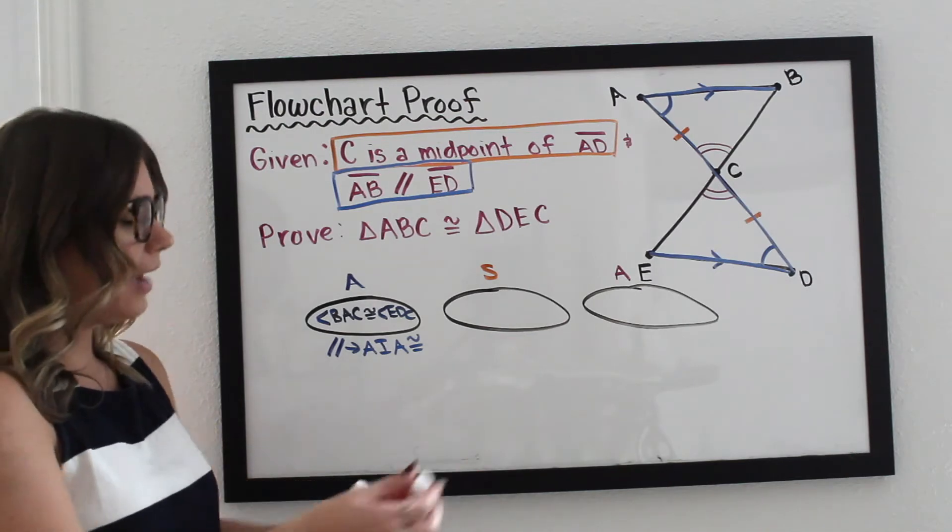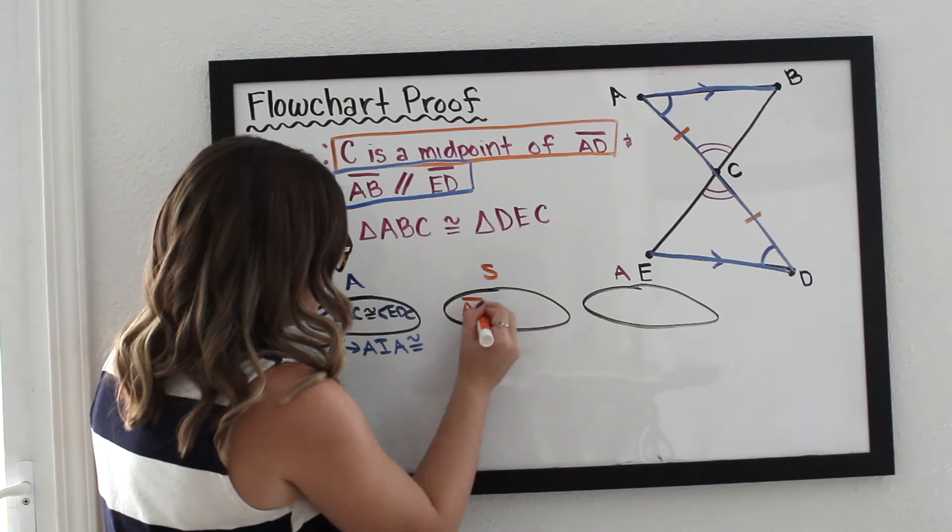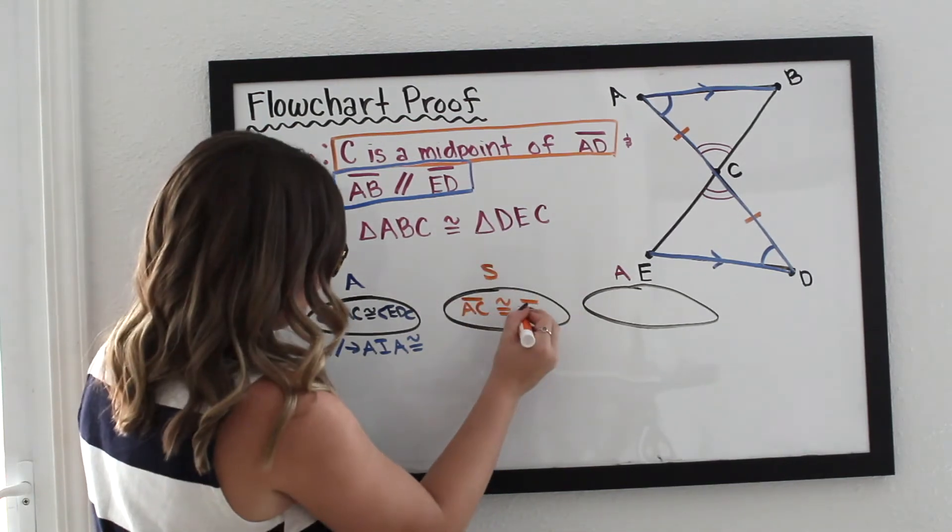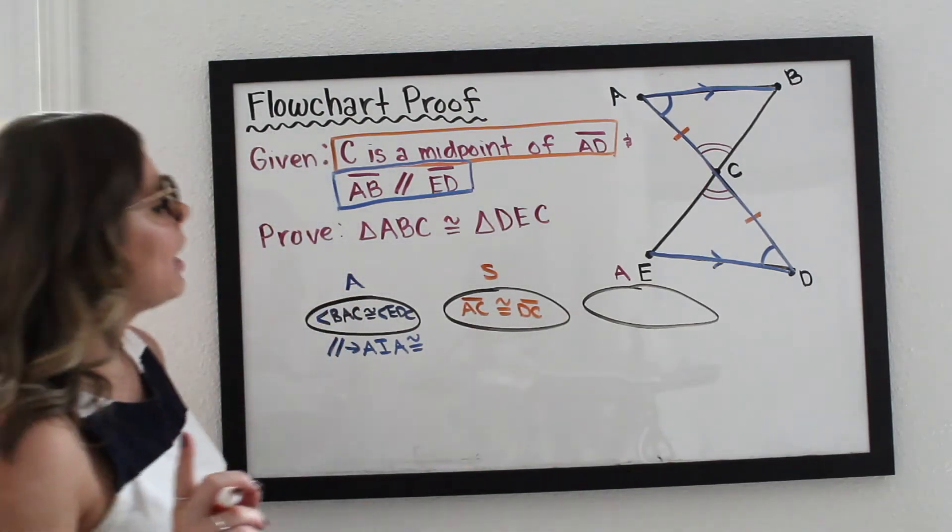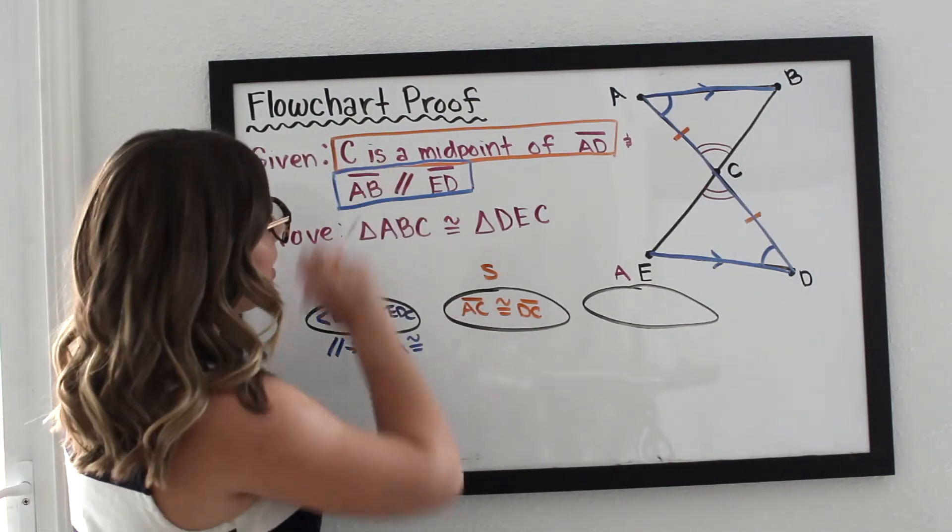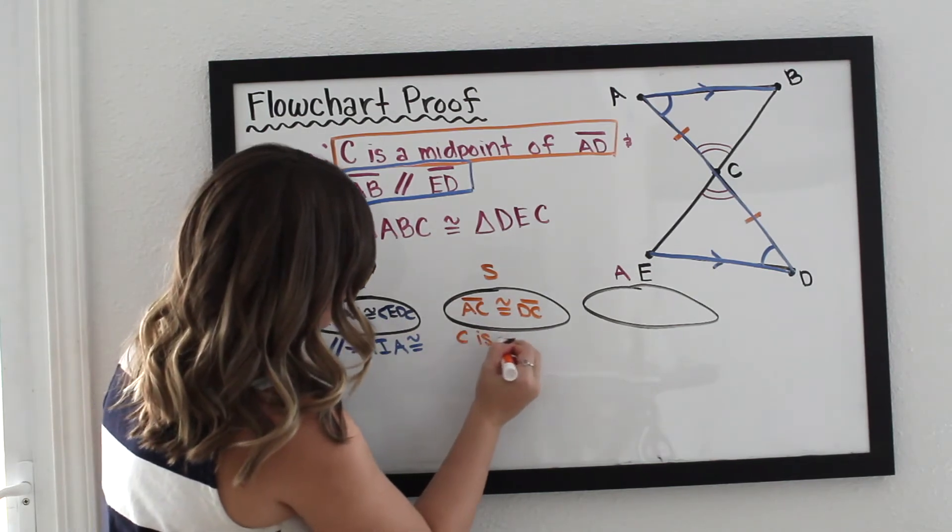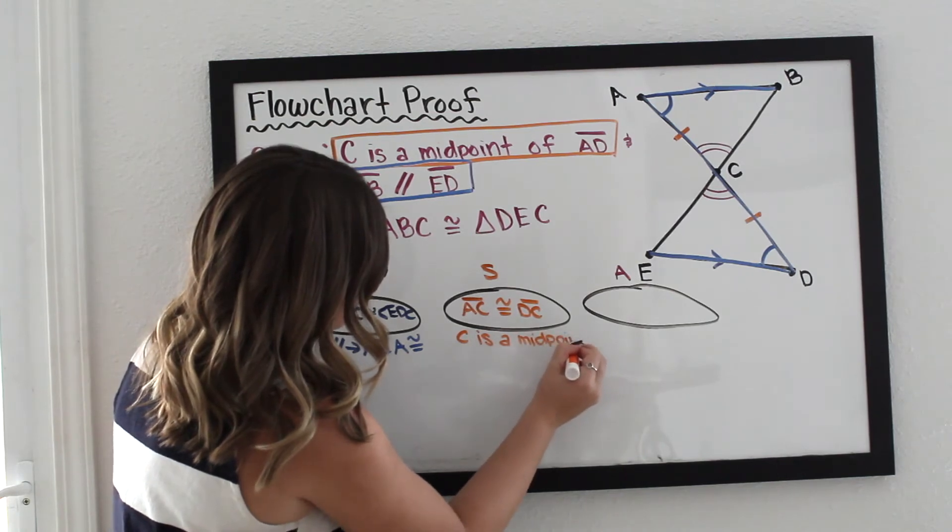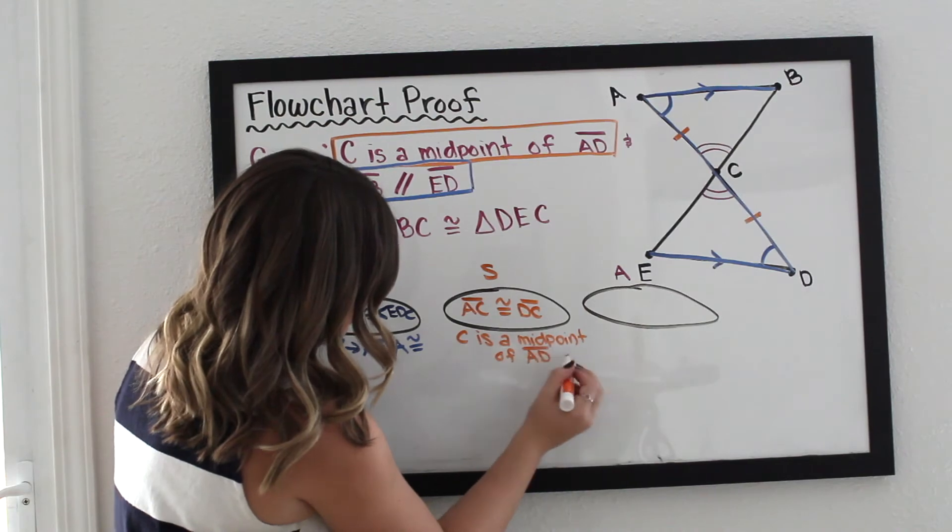Our side that we have, we know that AC is congruent to DC, and we know that because C is a midpoint of AD, and that was given.